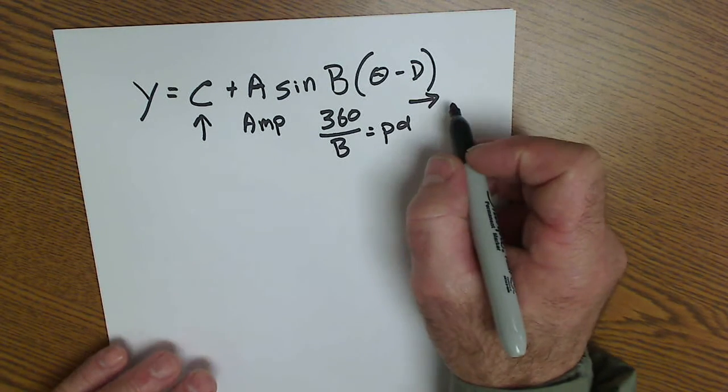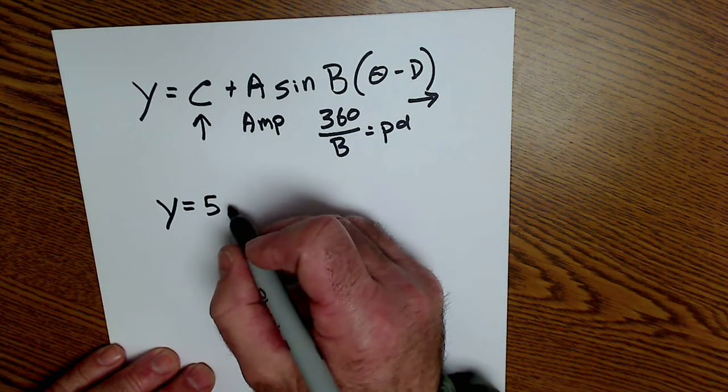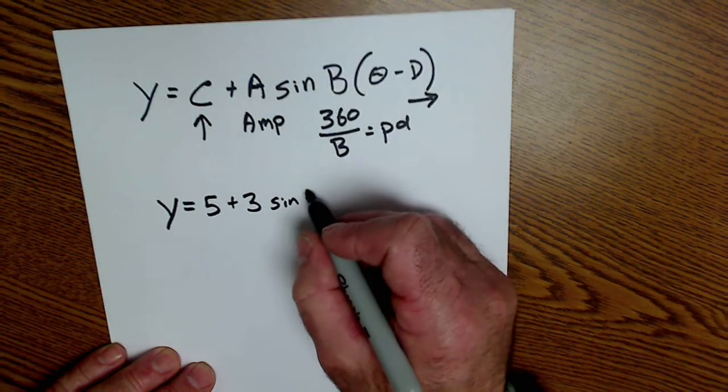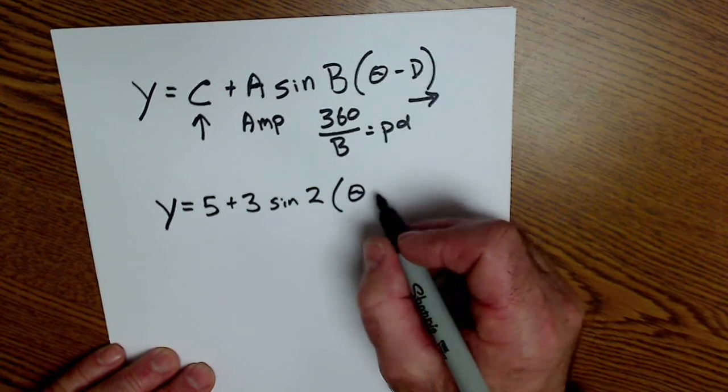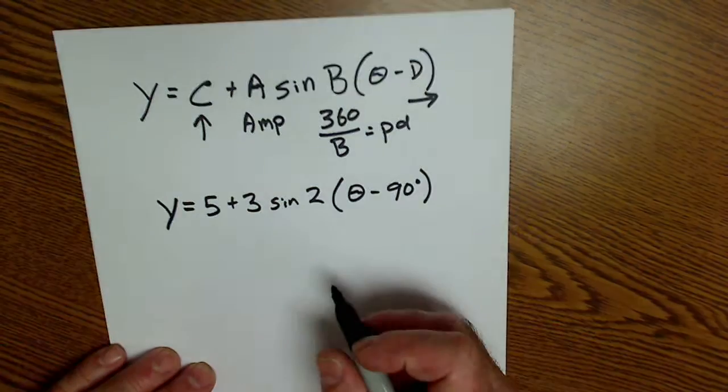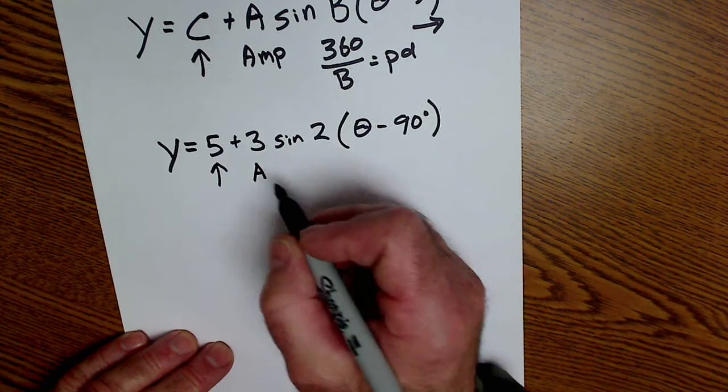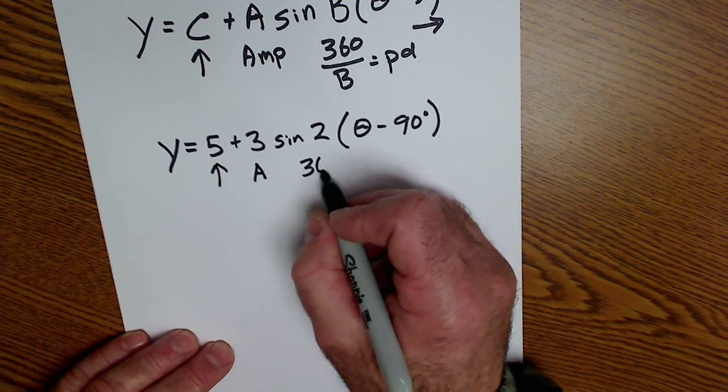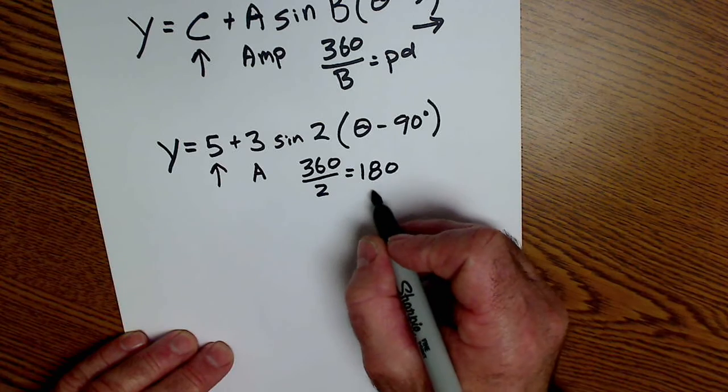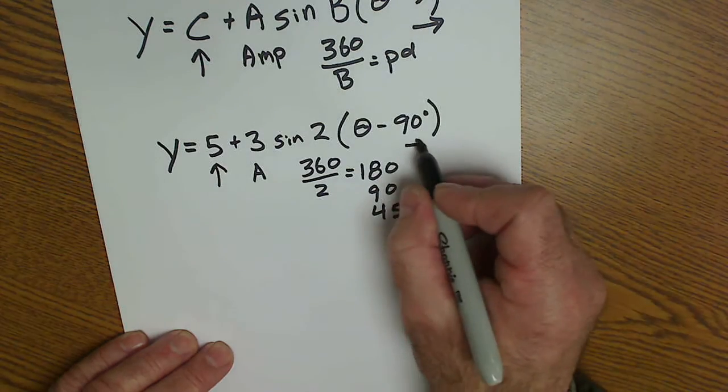So negative pushes it over. Here's a good example: y equals 5 plus 3 sine 2 theta minus 90 degrees. Step 1 is to mark up your equation. Vertical shift, amplitude, period is 360 divided by 2, which is 180. So a half cycle is 90, a quarter cycle is 45, and a phase shift.